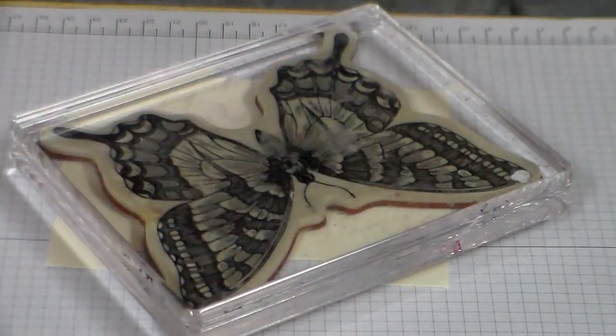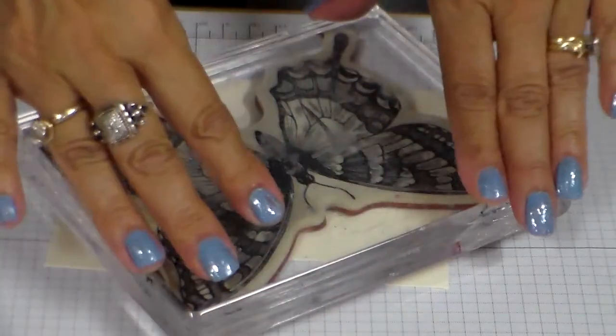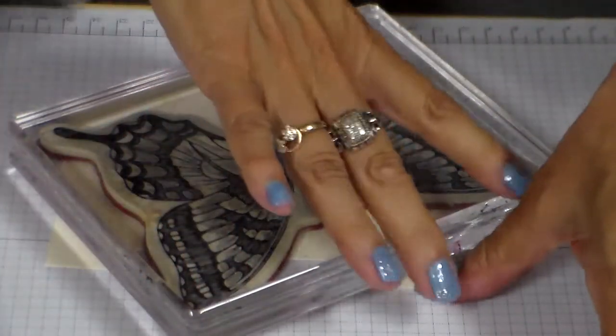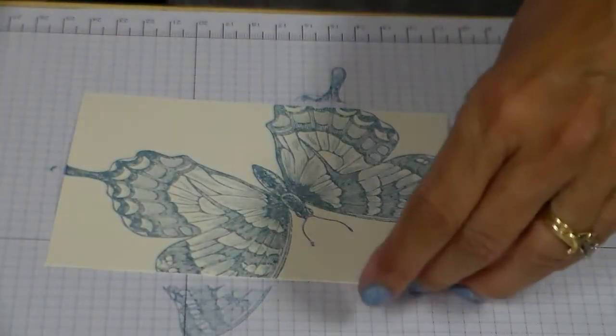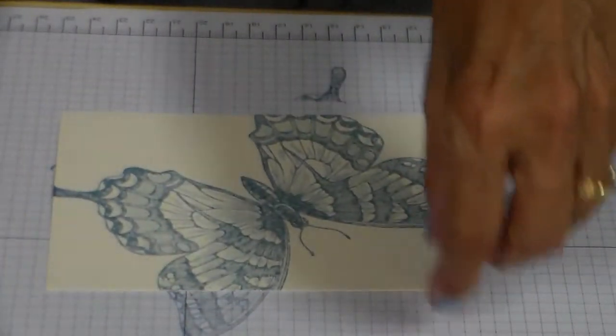I'm going to place this butterfly at an angle, then I need to stand up and put full pressure onto my stamp. Hold my paper and lift, and then you have this beautiful image onto your vanilla cardstock.